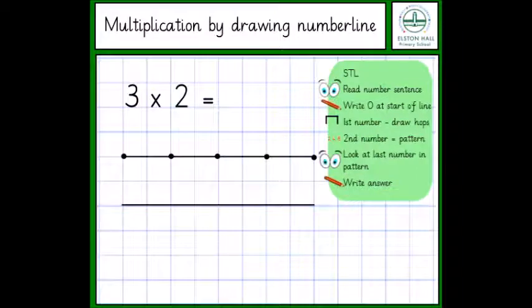Next, the children can move on to solving their multiplication by drawing their own number line. Firstly, we might give them a number line like this that is a line with the dots on. The children would have to draw their own hops and write their own numbers underneath. And when they've gotten used to this method, we would give them a plain line for them to do the spacing themselves and the hops and the numbers underneath.